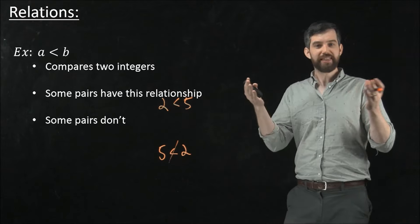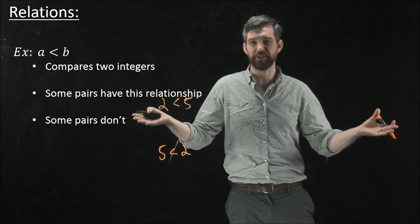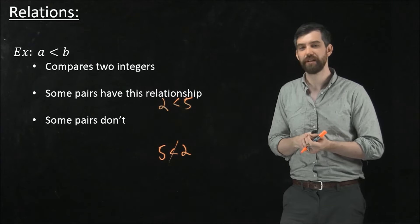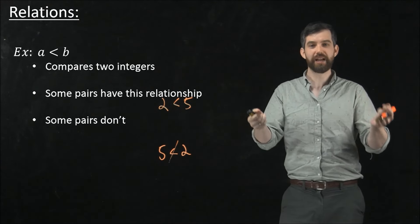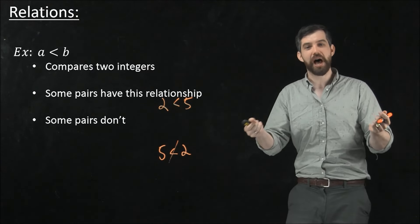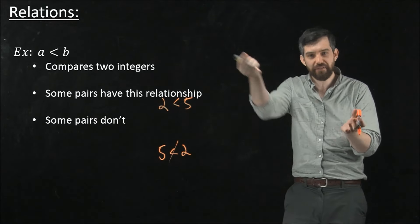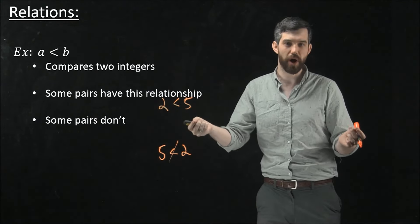So if I think about all of the ordered pairs of integers that I could have, where I've got a first one and a second one, sometimes those pairs have this relationship, and sometimes those pairs do not.